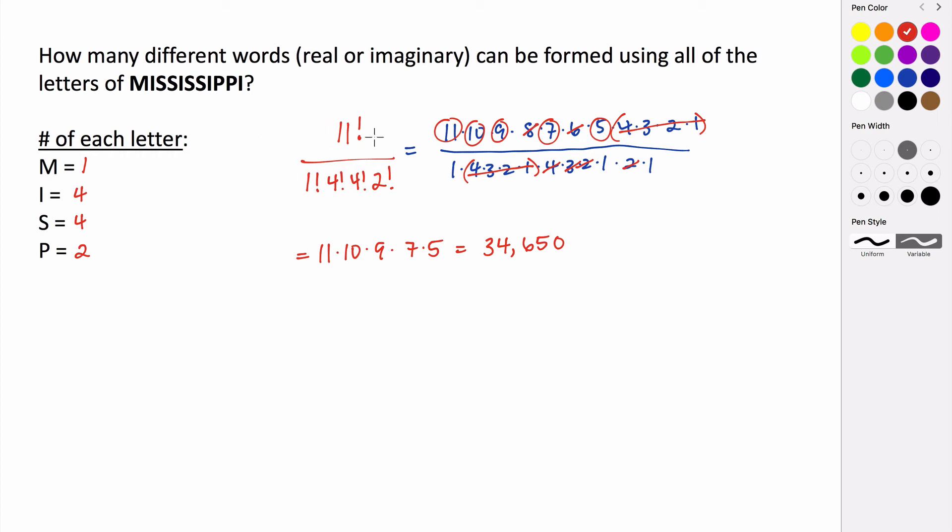And remember, we used this formula: n factorial divided by n₁ factorial times n₂ factorial times ... times nₖ factorial, where these represent the number of times that each object occurs in your original arrangement.